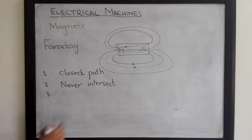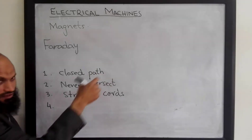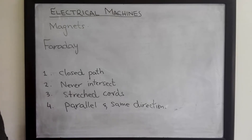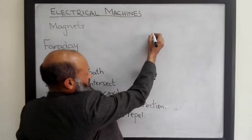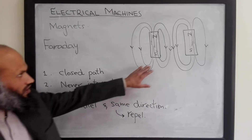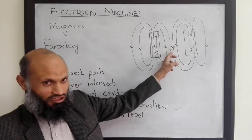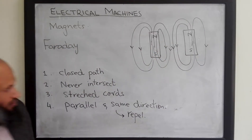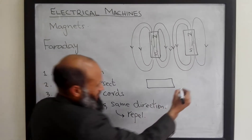The third property: these lines of flux are like stretched cords which tend to shorten themselves. If the lines of flux are parallel and in the same direction, then these lines repel each other. Here we have two magnets with magnetic lines of flux shown — the lines which are parallel to each other and in the same direction will cause the two magnets to repel themselves.